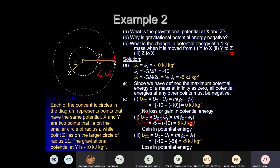So moving from Y to Z — going away from the planet — you gain 5 kJ of potential energy.